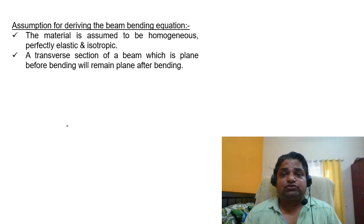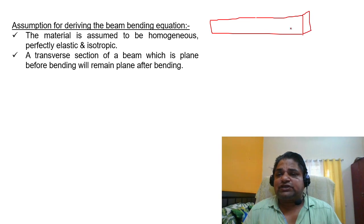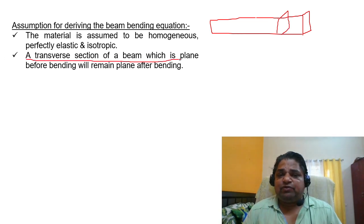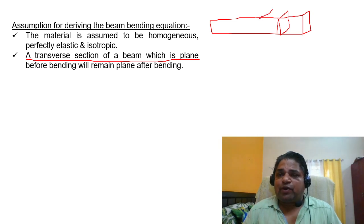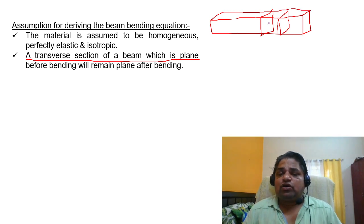A transverse section of a beam which is plane before bending — any cross-sectional section we consider — is not going to change. This is the prismatic bar assumption: wherever you cut the object, its cross section does not change. Every transverse section remains plane, meaning no distortion occurs perpendicular to the axis.